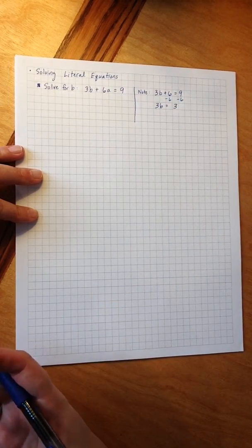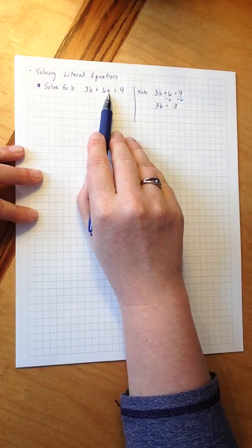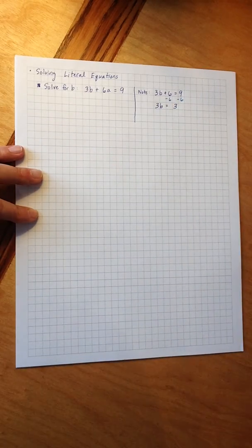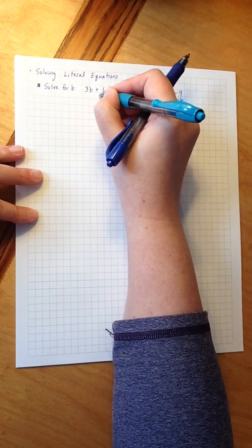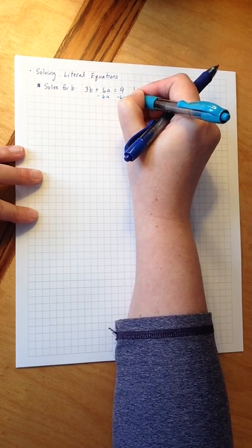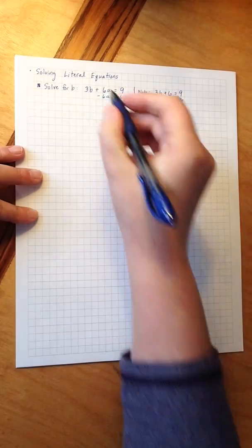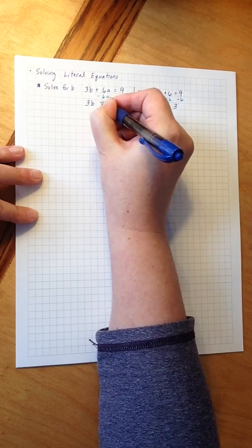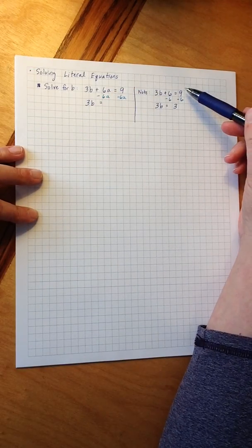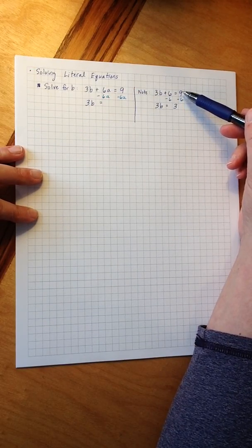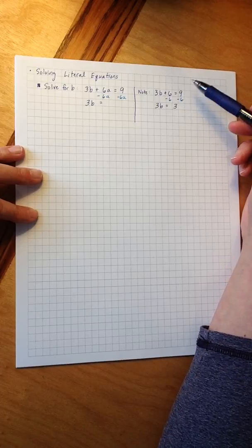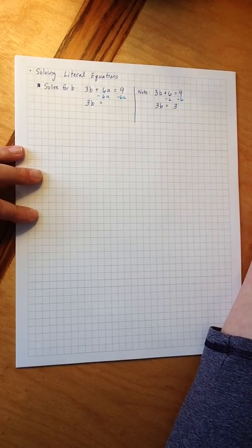Now in the equation we're trying to solve, I don't have a 6, I have a 6a, but that doesn't matter that much because I can still subtract 6a on both sides, and this gives me 3b equals. Now in our related equation, I can find what 9 minus 6 is. I know these numbers, they're like terms, it equals 3.